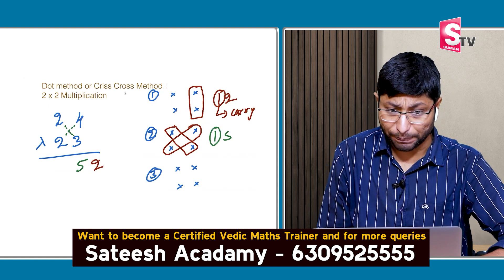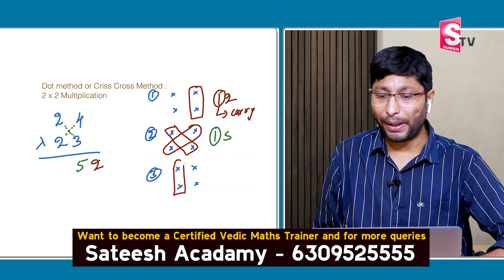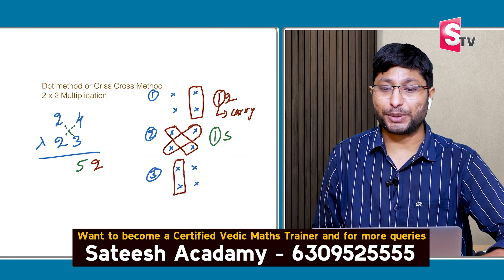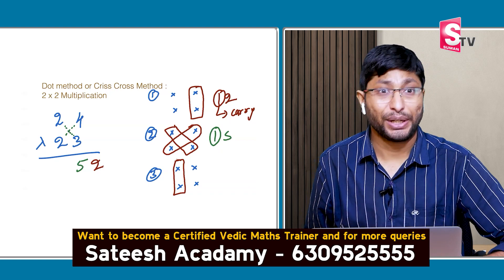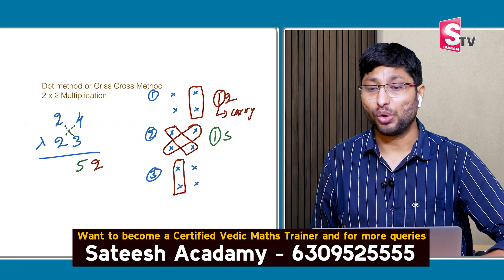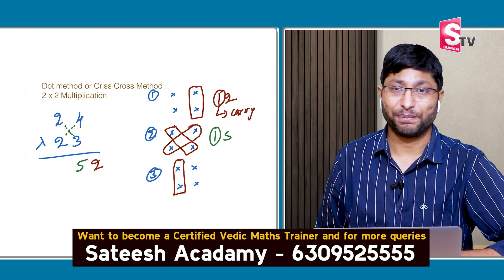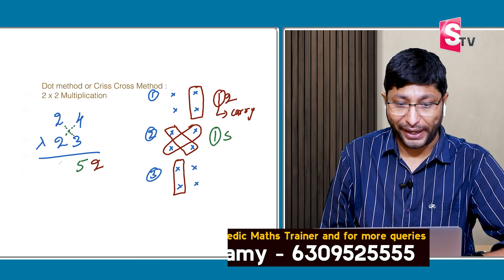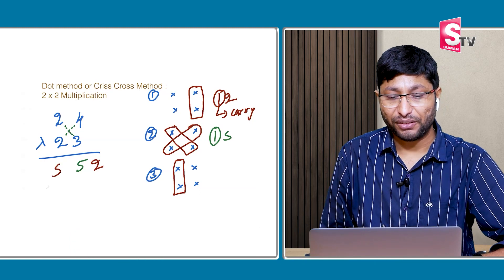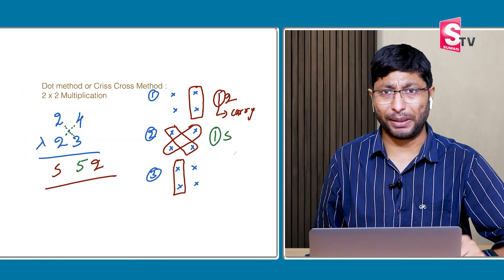Step 3: multiply tens place into tens place. 2 × 2 = 4. Already 1 carry. 4 plus 1 = 5. So the answer is 552. Simple.